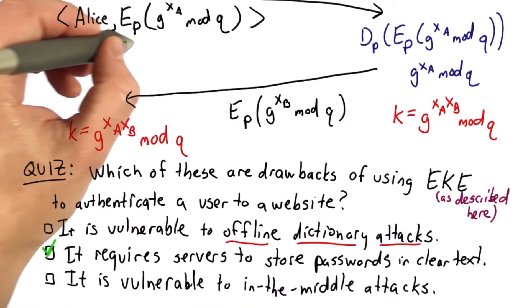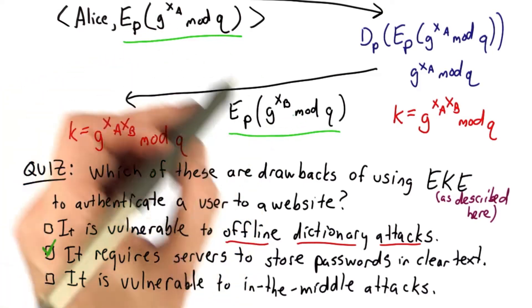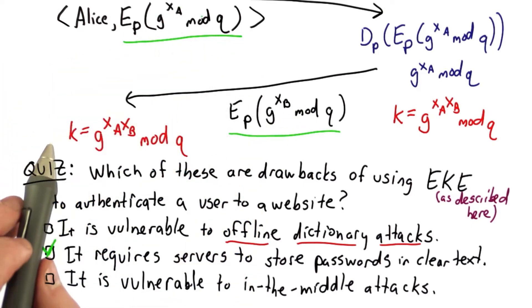And the reason for that is if you look at the two messages that are sent, the value that's encrypted with a password is the result of a Diffie-Hellman exponentiation. If we believe the Diffie-Hellman assumption, that's indistinguishable from random.